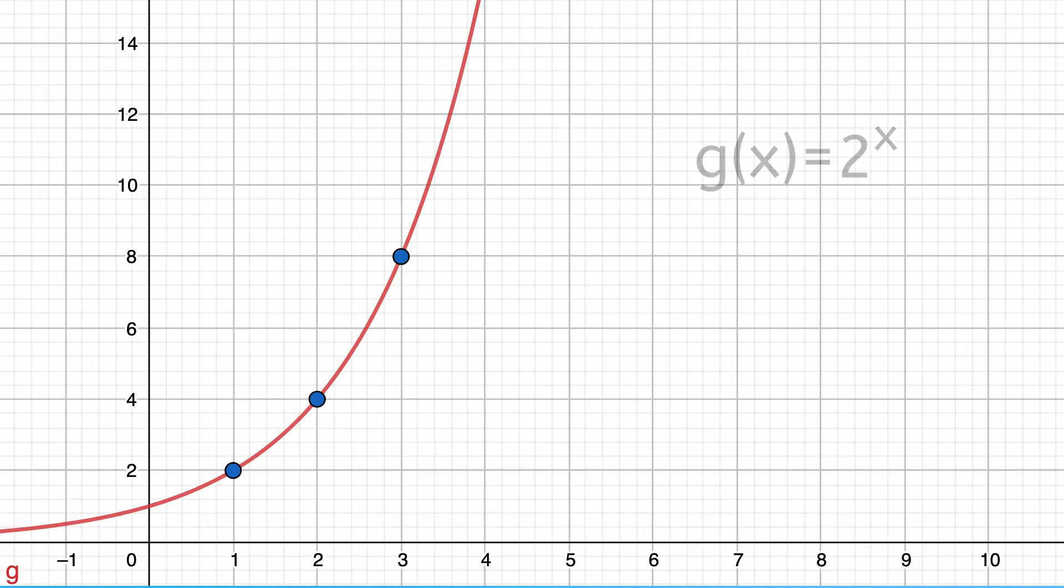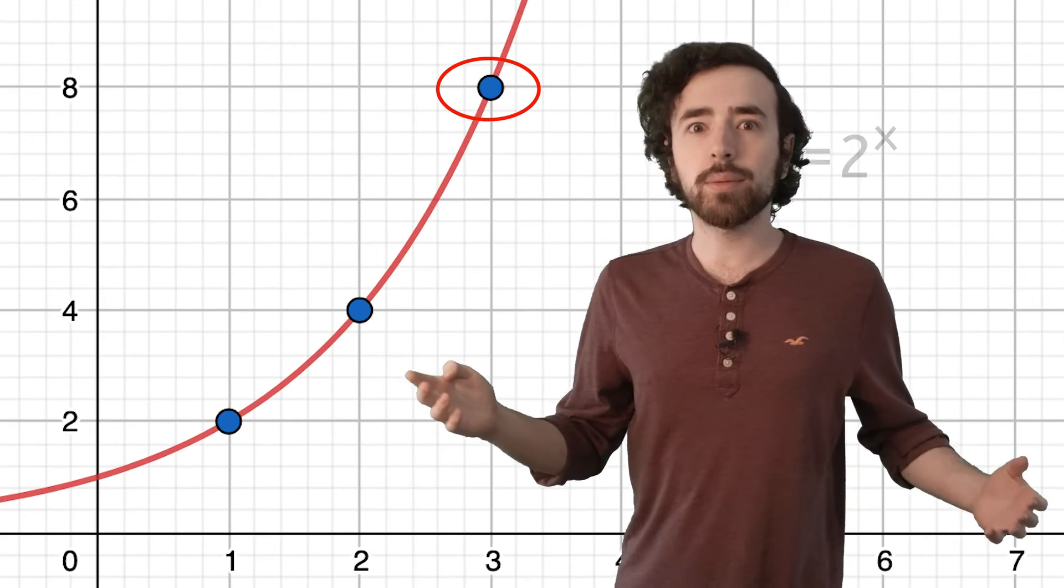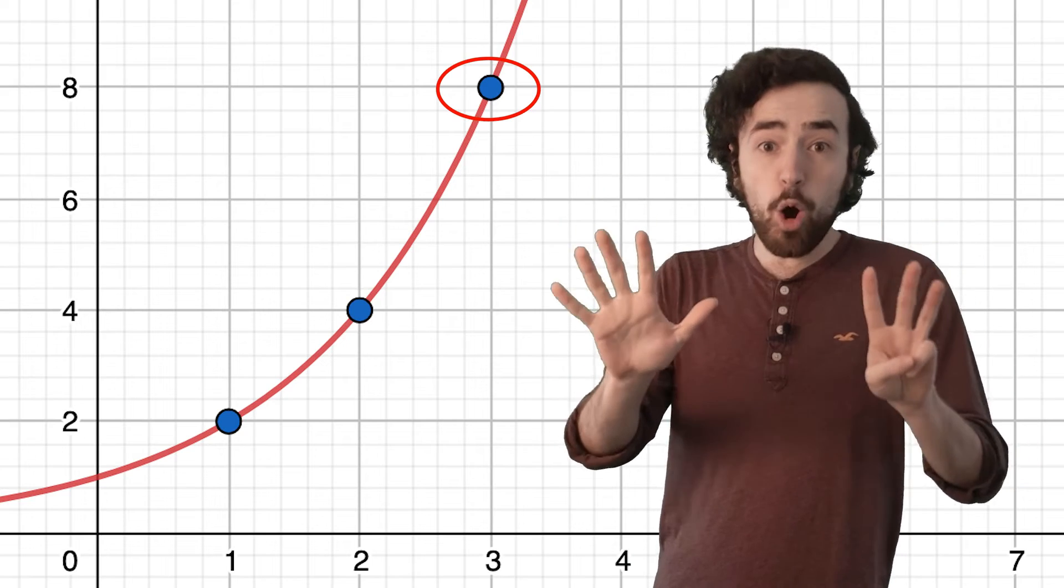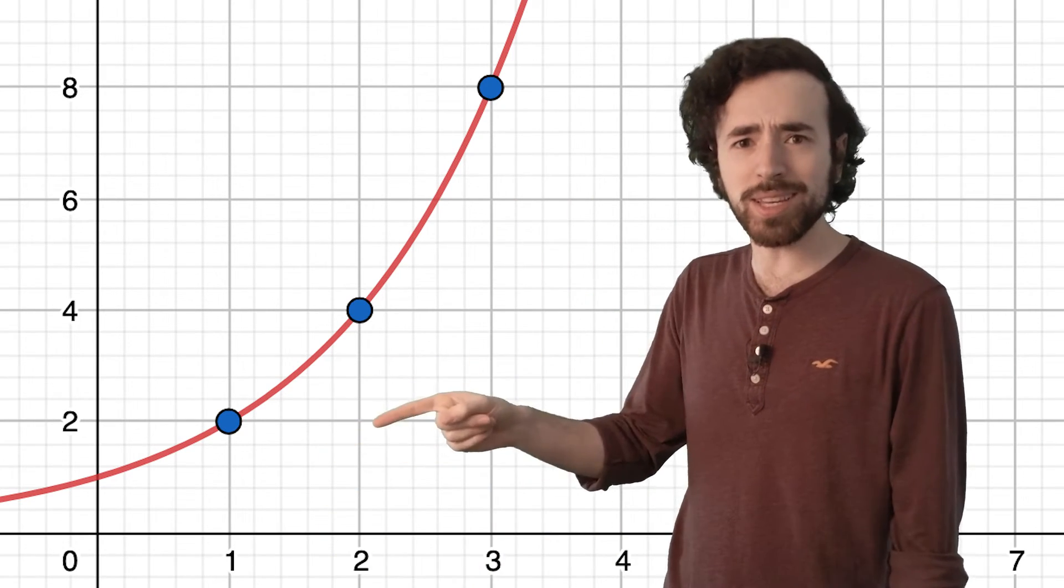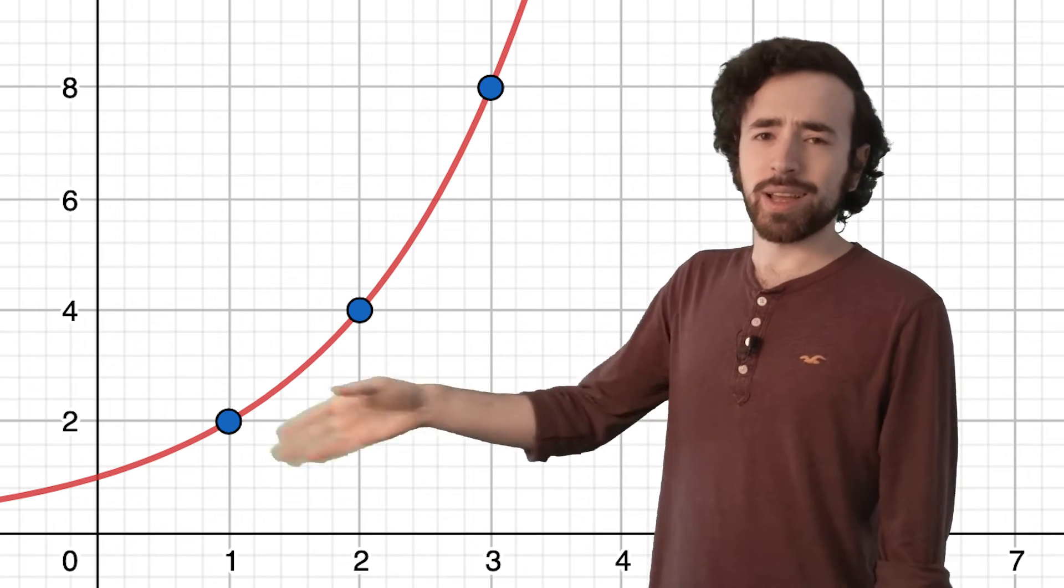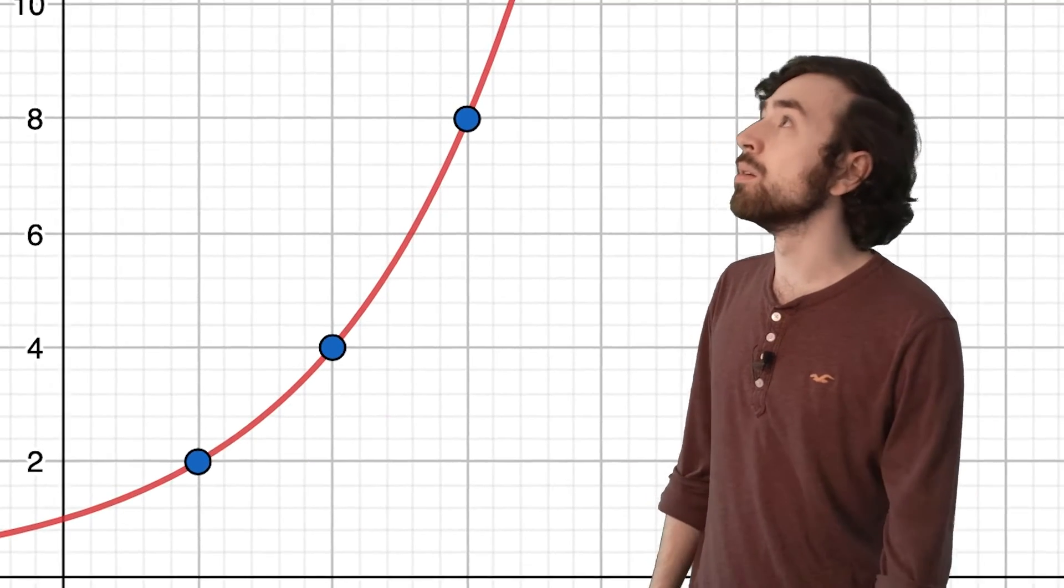If we say g of x equals 2 to the x, and then we graph it, we see that on day 1, I get $2. But on day 2, that doubles, and I get $4. Day 3, that doubles again. I get 8 whole dollars. This is terrible. This is probably illegal. That's less than minimum wage. All right, let's just graph it to day 30 to see how the...